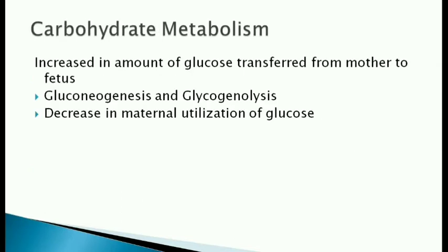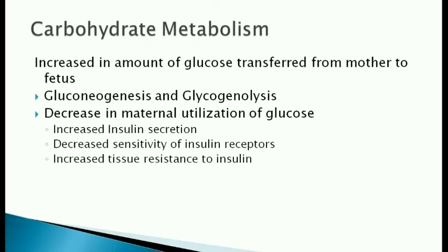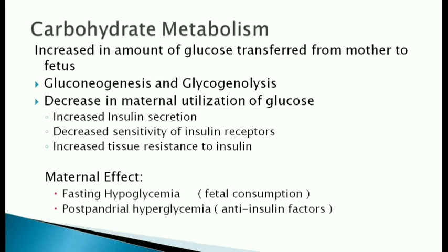Carbohydrate metabolism: The fetus needs more carbohydrates also. To supply this, there is increased gluconeogenesis and glycogenolysis. The maternal utilization of glucose is also decreased. Mechanisms to decrease maternal utilization of glucose are increased insulin secretion, decreased sensitivity of insulin receptors, and increased tissue resistance to insulin. These changes in carbohydrate metabolism in pregnancy lead to maternal fasting hypoglycemia due to fetal consumption and postprandial hyperglycemia, due to anti-insulin factors.